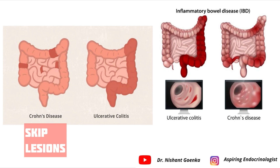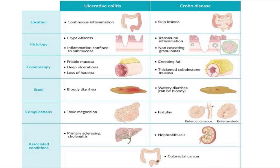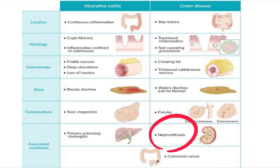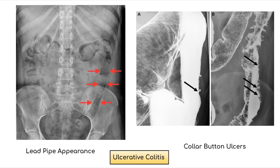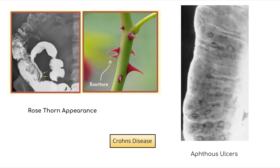Looking at the images: in Crohn's disease we can see skip lesions, while in ulcerative colitis there is continuous involvement. Ulcerative colitis has proctitis; Crohn's disease has rectal sparing. Microscopically, crypt abscesses are characteristic of ulcerative colitis, and transmural involvement of all layers is characteristic of Crohn's disease. Primary sclerosing cholangitis is associated with ulcerative colitis; nephrolithiasis with Crohn's disease. Radiological images show lead pipe appearance and collar button ulcers in ulcerative colitis, and cobblestone appearance, string of Cantor sign, rose-thorn appearance, and aphthous ulcers in Crohn's disease.